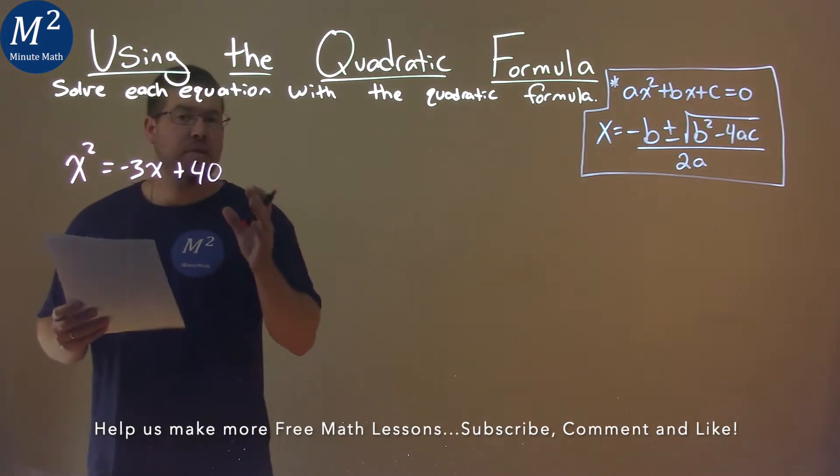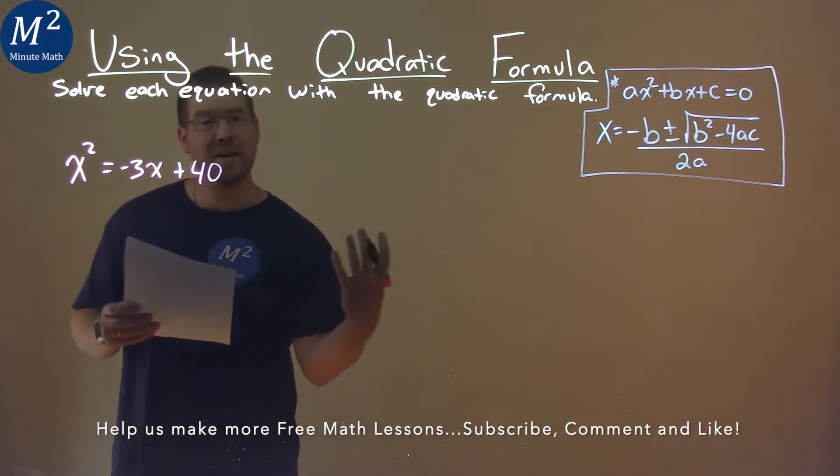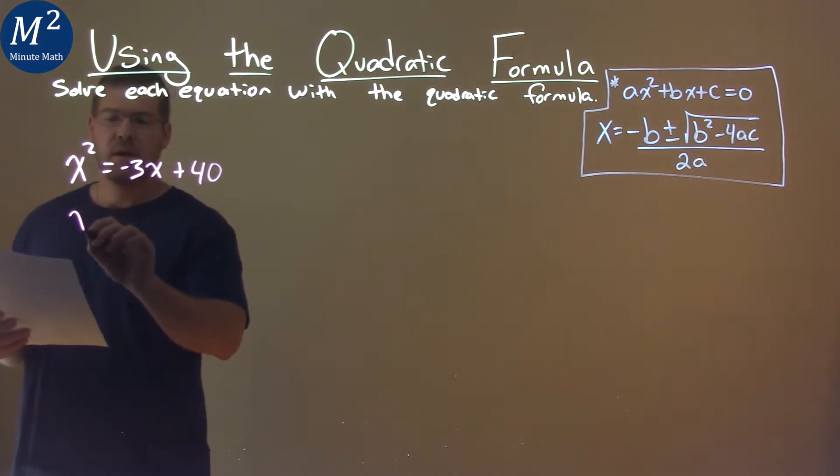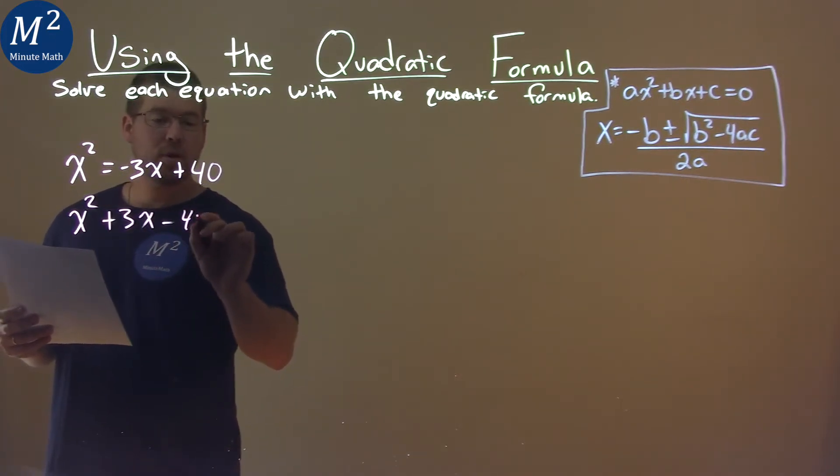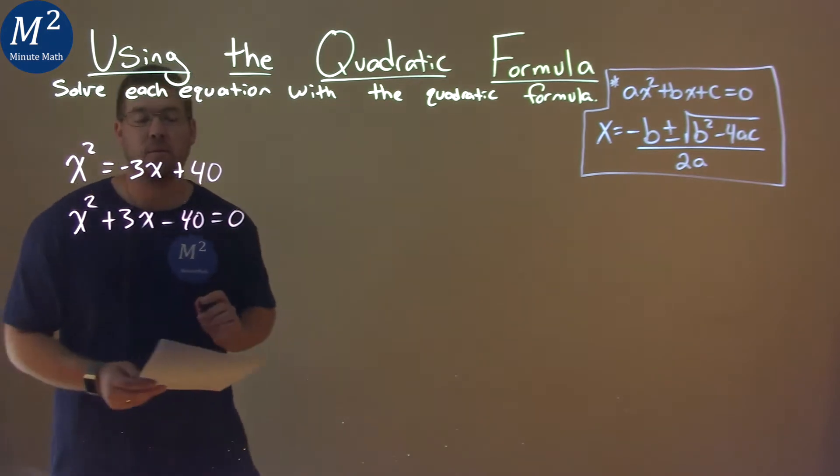First thing I notice is I need to get this equal to zero, so I'm going to bring everything to the left-hand side. x squared plus 3x, adding a 3x to both sides, subtracting a 40 to both sides, makes it now equal to zero.